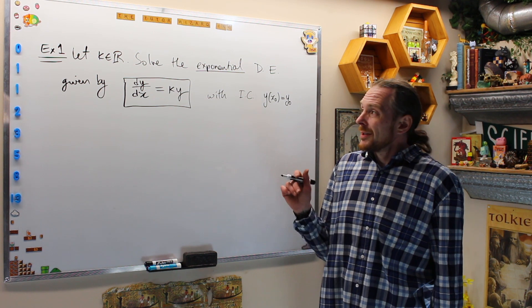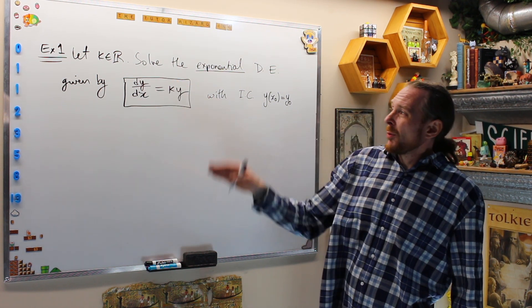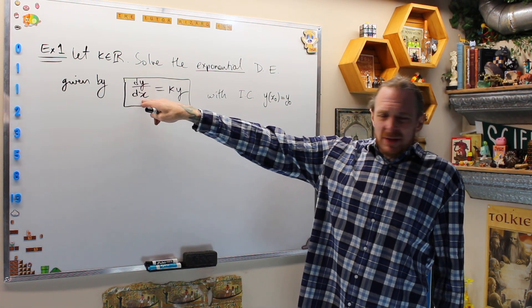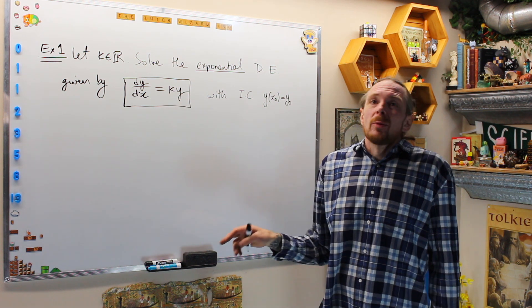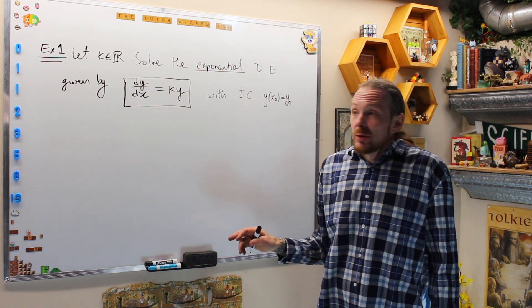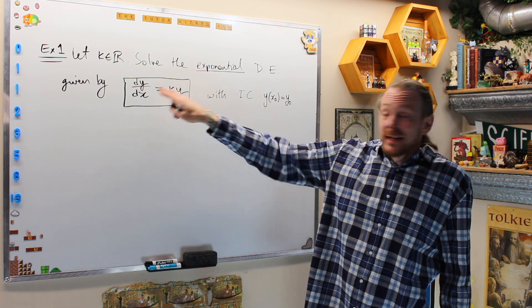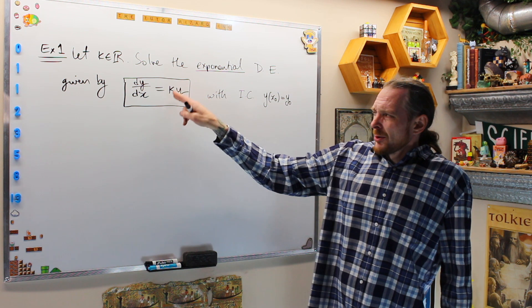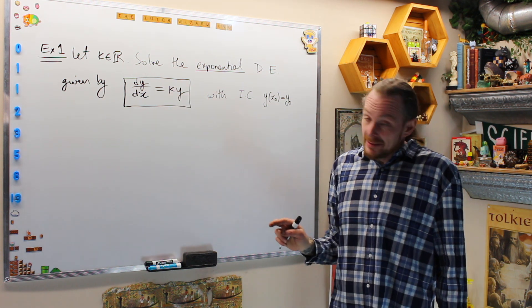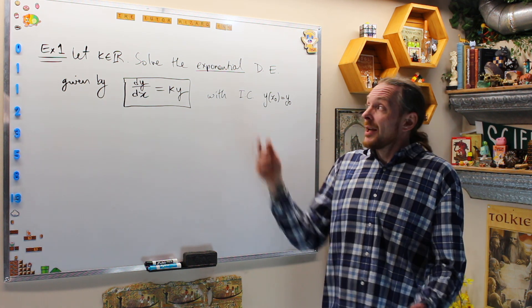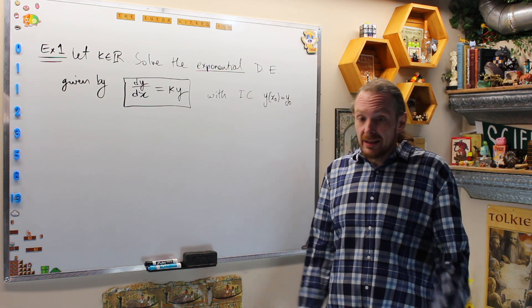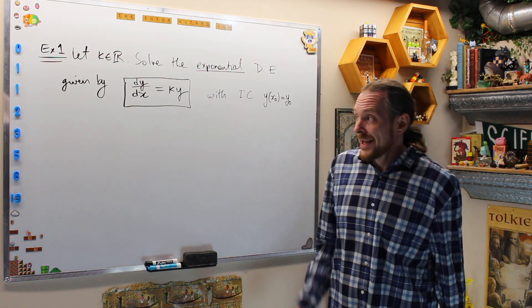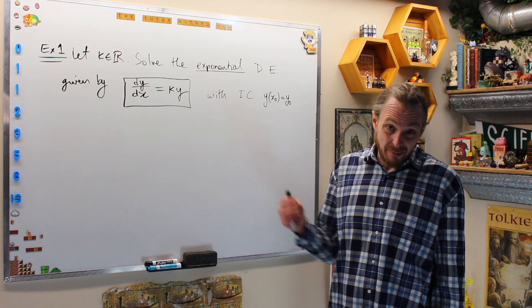For example one, let k be any real number and we want to solve the exponential differential equation. The derivative — the rate of change of y with respect to x — is directly proportional to itself. We're looking for functions whose derivative is directly proportional to itself. This is called the exponential ODE, and the solutions are going to be exponential functions giving exponential growth or decay. Let's solve explicitly using our methods.